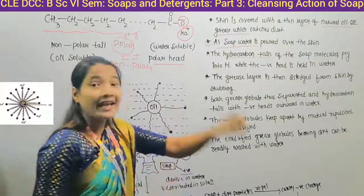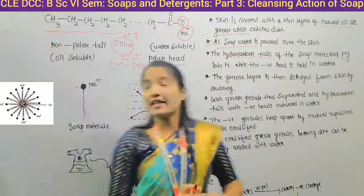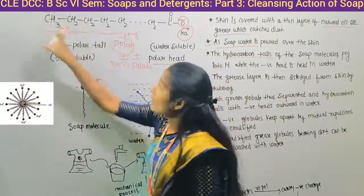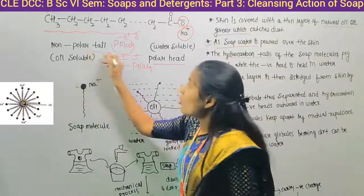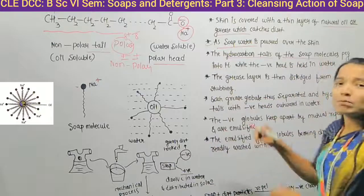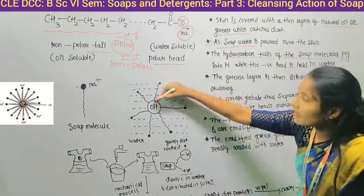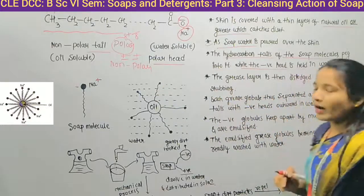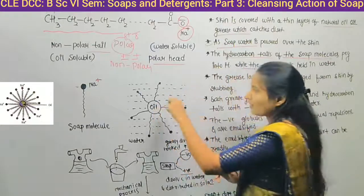The hydrocarbon tails — which consist of carbon and hydrogen — are the tails of the soap molecules. They pack into the oil or grease on the skin. While the hydrocarbon tail is embedded in the oil, the negative polar head is held out in the water.